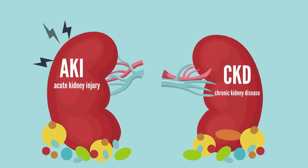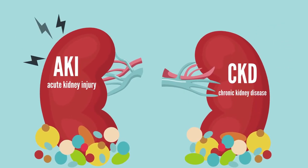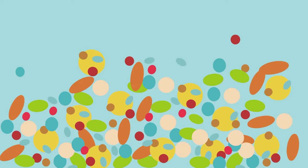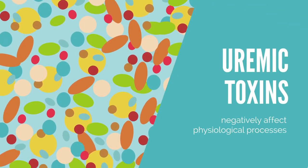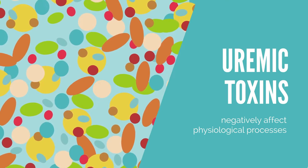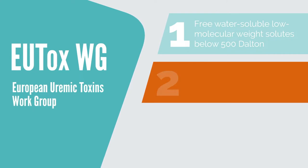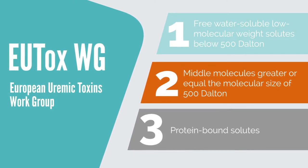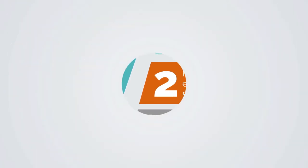these waste solutes cannot be degraded or excreted and therefore accumulate in the body. Some of these accumulating products may negatively affect physiological processes and are referred to as uremic toxins. The European Uremic Toxins Work Group classifies uremic toxins into three categories according to the various physicochemical properties and the associated adverse effects.